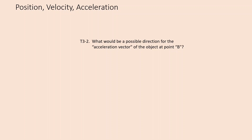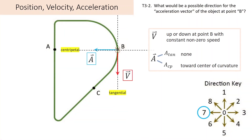Acceleration is a little more tricky. I'll start with an object moving at constant speed. In cases A and C, constant speed meant no acceleration. But when moving on a curve, we not only have the tangential direction to consider, but also the direction perpendicular to that — and in particular, pointing in toward the center of curvature. That's referred to as the centripetal direction. If we have a constant non-zero speed, it's only the tangential acceleration that is zero; we do have a centripetal acceleration pointing in toward the center of curvature — so that would be option 7.